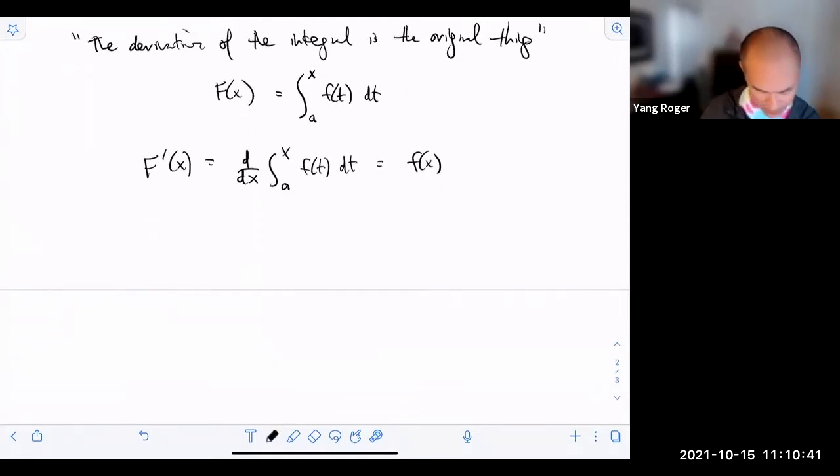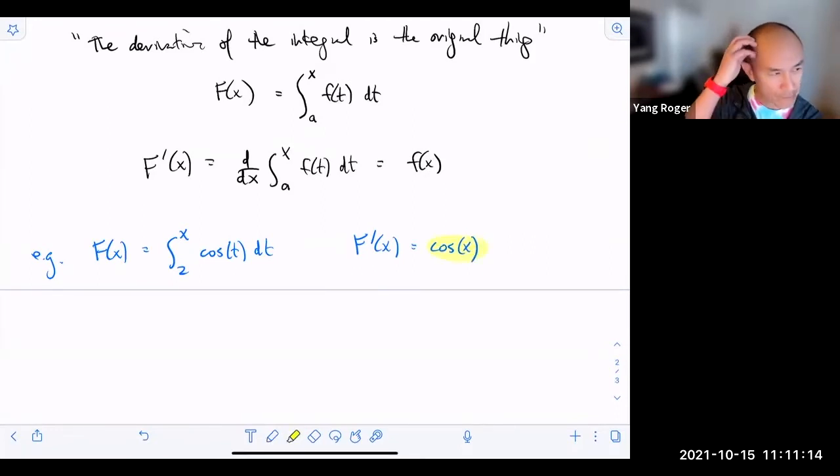So we're going to look at some examples here. Let's say that my F(x) is equal to the integral from 2 to x of cosine(t) dt. If I want to find the derivative of this strange looking integral function, all I do is I write the inside function, which is cosine, and then I stick in an x. And that's it. That's your answer.